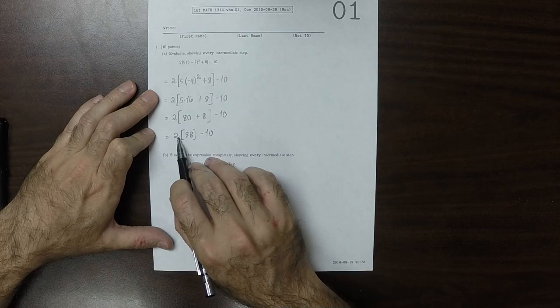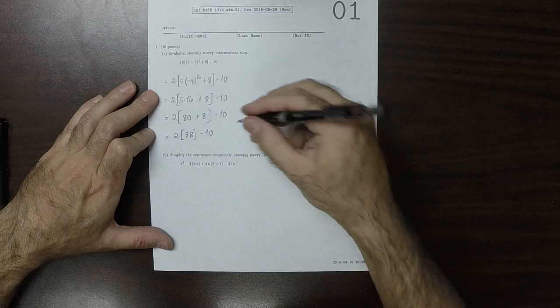So now we have two operations, this multiply and this subtract. Multiply comes first.